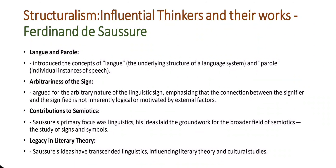Next is the Arbitrariness of the Sign. Saussure argued for the arbitrary nature of the linguistic sign, emphasizing that the connection between the signifier and the signified is not inherently logical or motivated by external factors. This idea challenged earlier theories that sought to find inherent connections between words and their meanings.